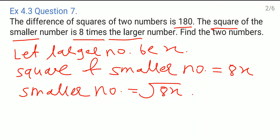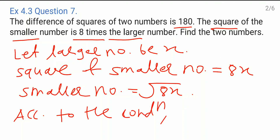Now, according to the condition, the difference of squares of two numbers means the square of the larger number minus the square of the smaller number. The larger number is x, so it is x squared minus the square of the smaller number, which is 8x, and this equals 180.